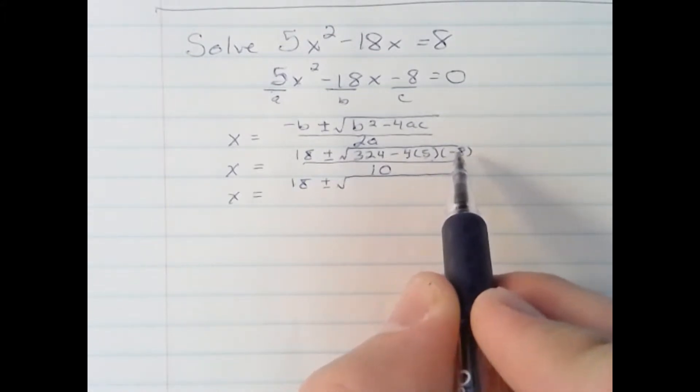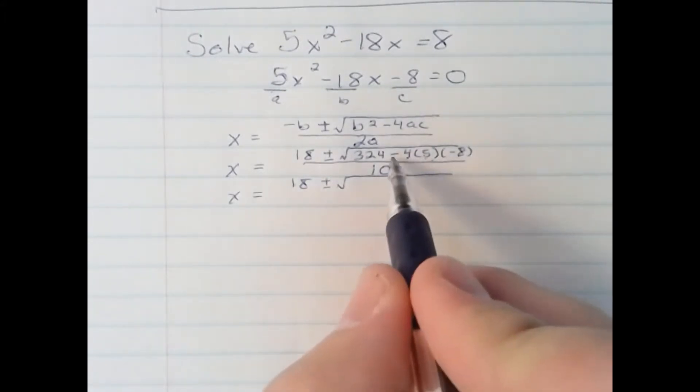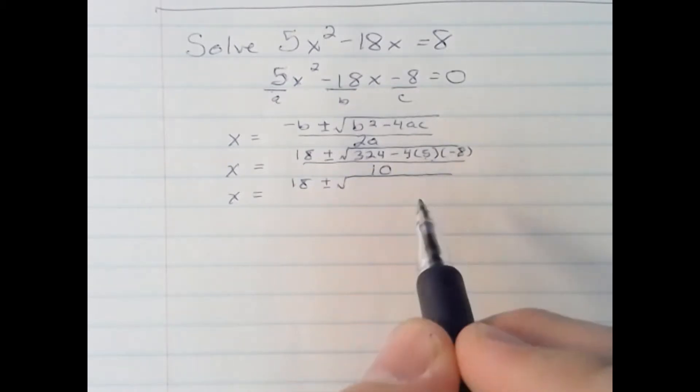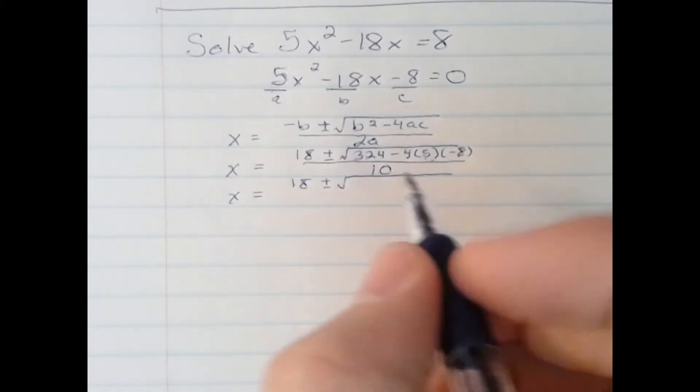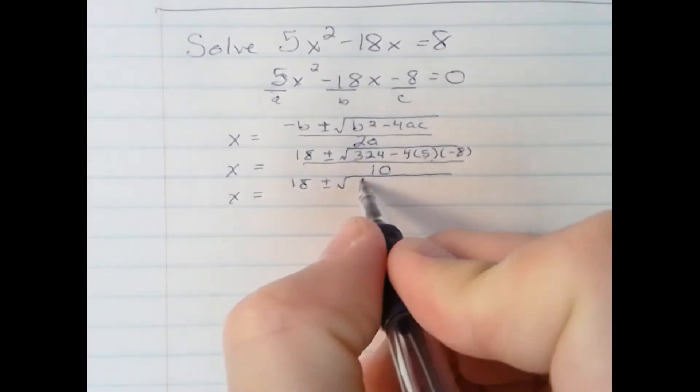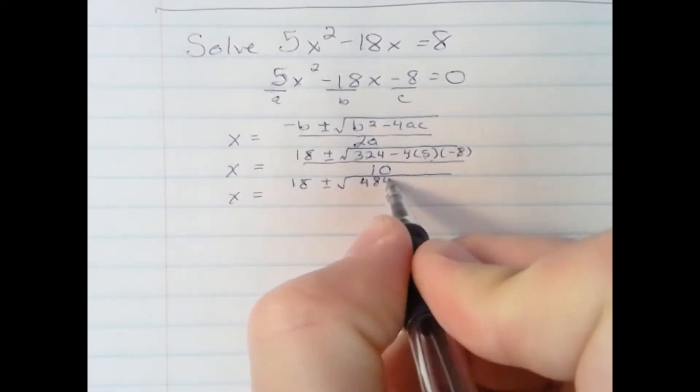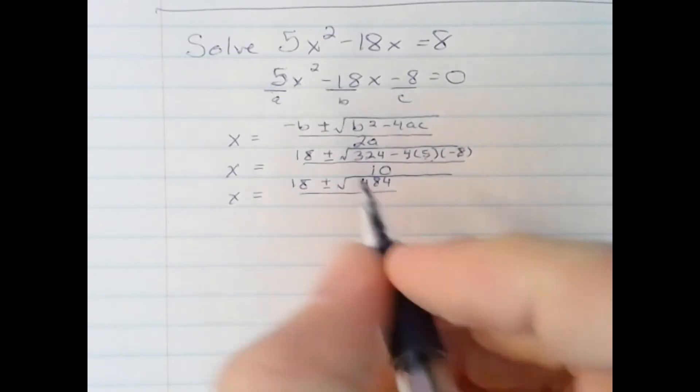20 times negative 8 is negative 160. I have minus a negative 160, which is really 324 plus 160, giving us 484. And remember, we're still over 10.